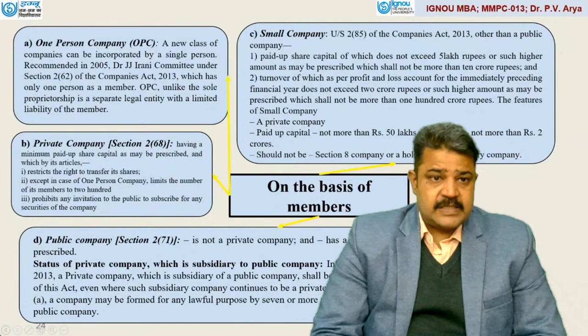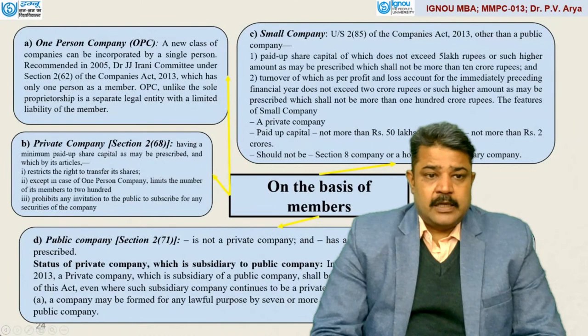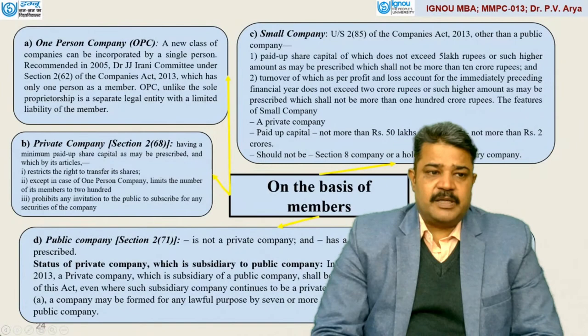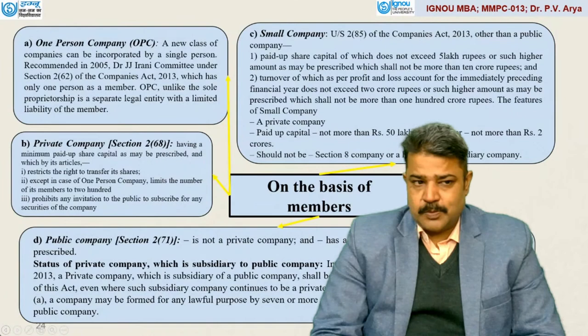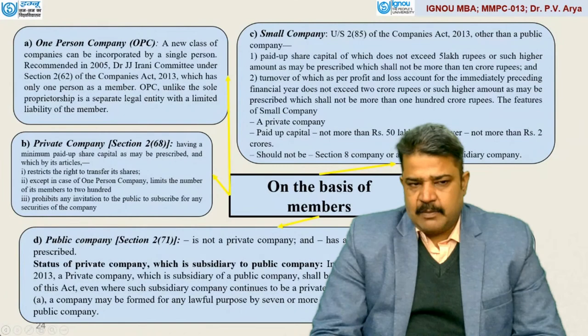On the basis of members: one person company, that is OPC. A new class of companies can be incorporated by a single person, recommended in 2005 by the Dr. J.J. Irani committee under Section 262 of the Companies Act, in which only one person is a member. OPC, unlike the sole proprietorship, is a separate legal entity with limited liability of a member. In sole proprietorship, the liability rests on the proprietor, whereas in case of OPC the liability is limited for the member.